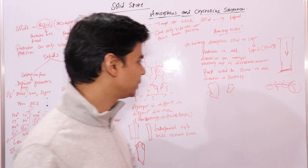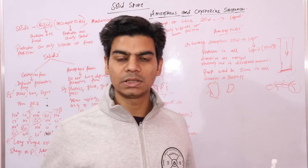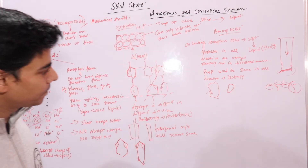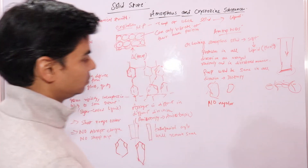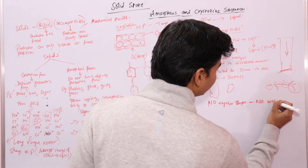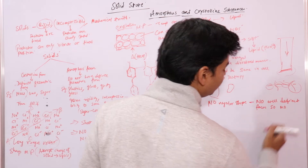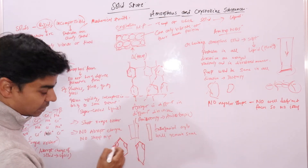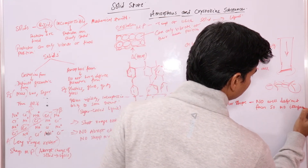Now let's talk about amorphous substances. Amorphous substances do not have any regular shape, and since they do not have any regular shape, they do not have well-defined faces. No regular shape means no well-defined faces, and therefore no interfacial angles. Since they do not have well-defined faces like crystalline substances, there is no concept of interfacial angles.